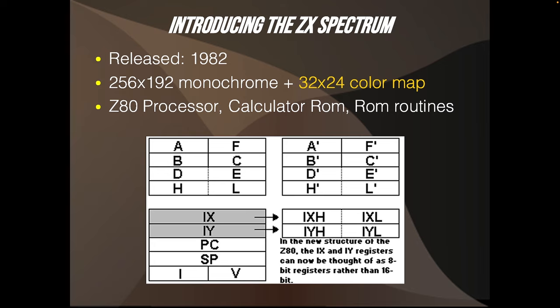Let's introduce the ZX Spectrum. It was released in 1982. It has a monochrome display of 256x192 pixels and a 32x24 color map. It has a Z80 processor, calculator ROM and various ROM routines that you can use. Here you will see the register pairs that you can use with the Z80 processor: AF, BC, DE, HL and two index registers, IX and IY. It also has shadow registers.